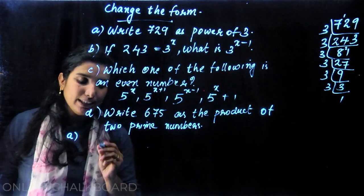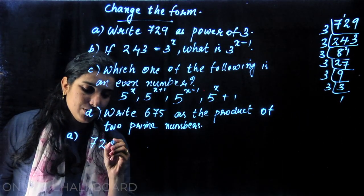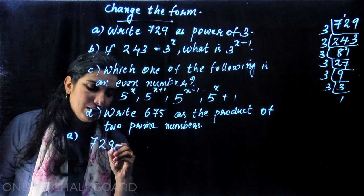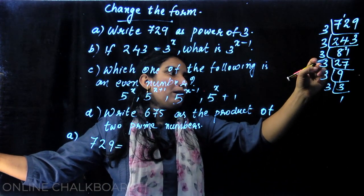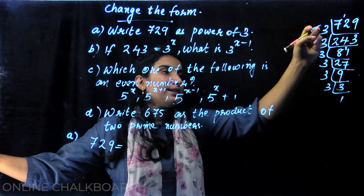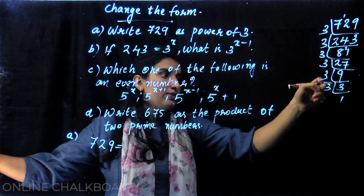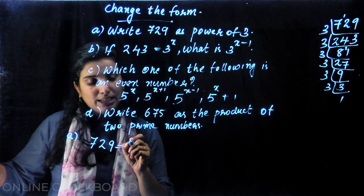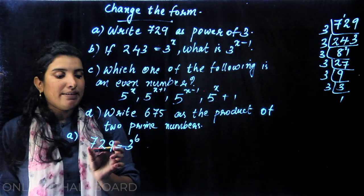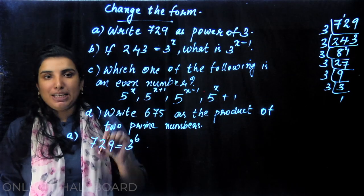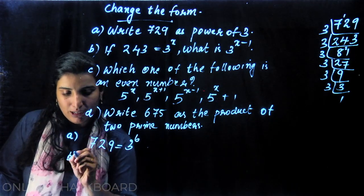729 is equal to 3 raised to the power. Counting: 1, 2, 3, 4, 5, 6 — three raised to 6. Now 3 raise to 6 is the answer. 729 equals 3 raise to 6. This is the answer.